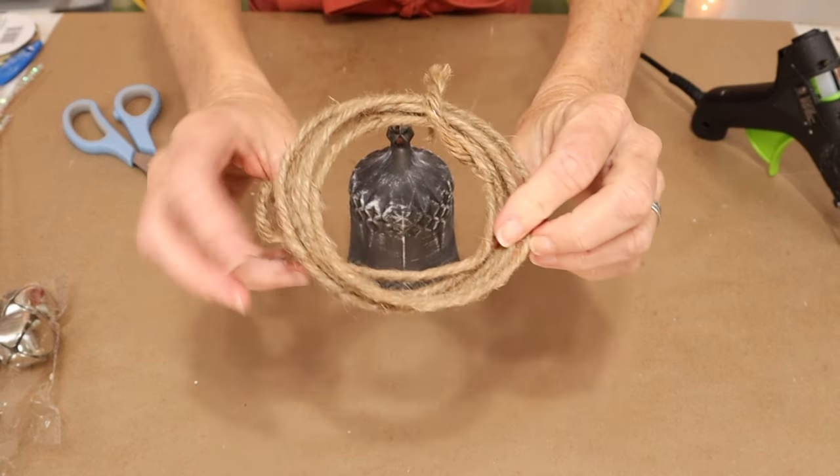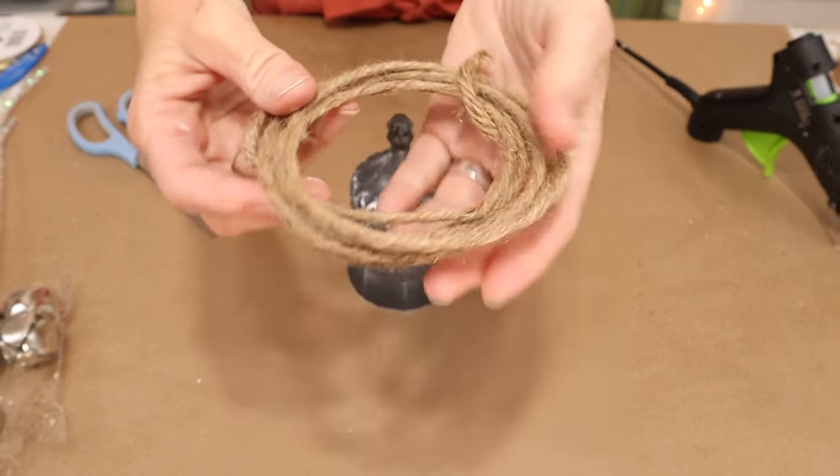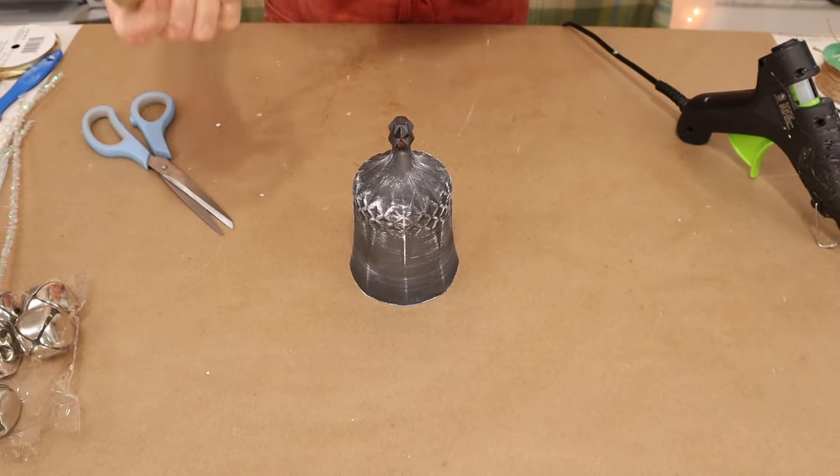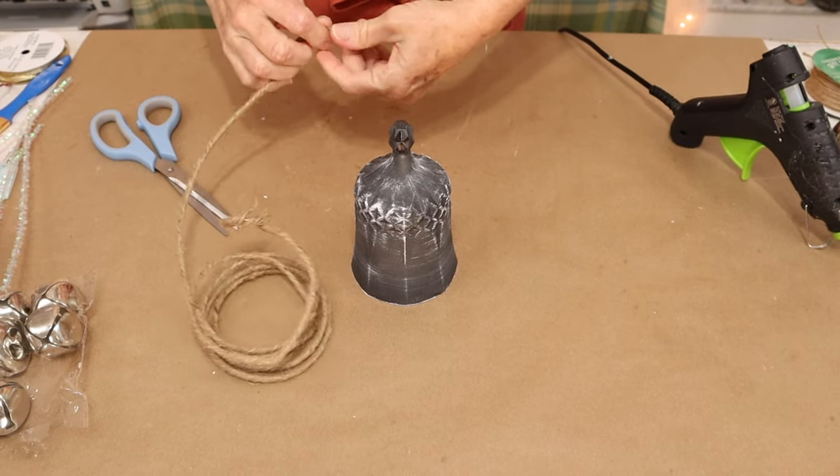Now we're going to move on and we're going to bring back in our wired jute twine. And we're going to wrap the top part of our wine glass. We're going to do a few wraps around.